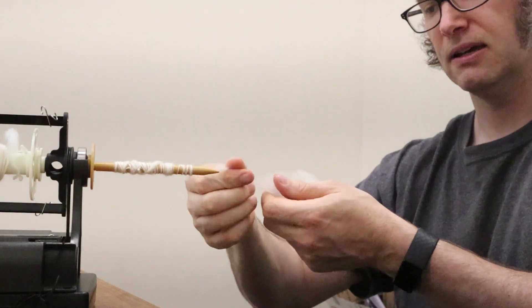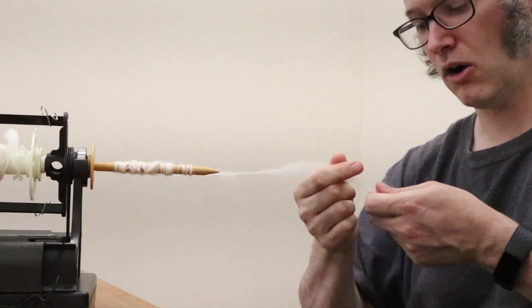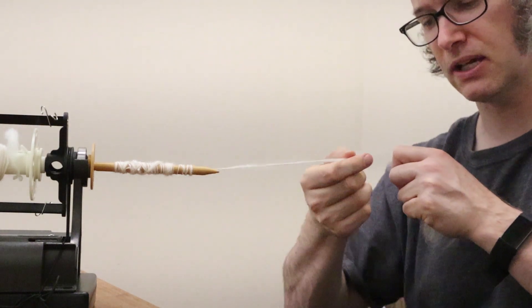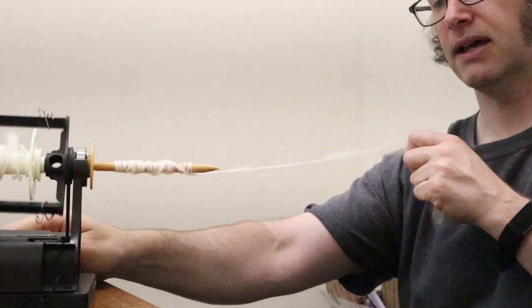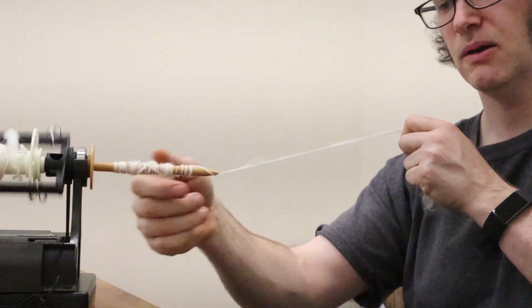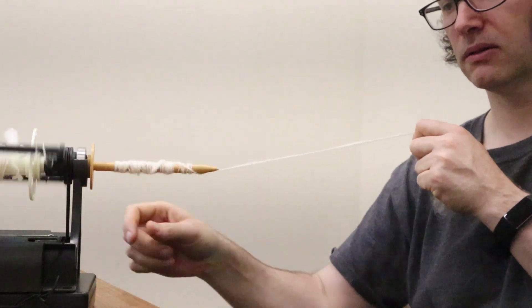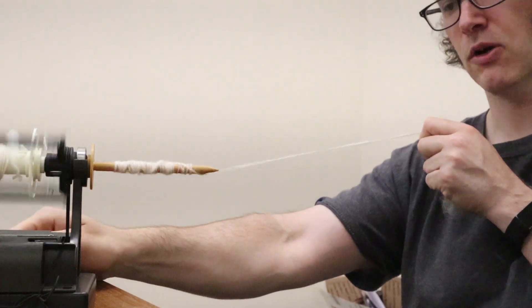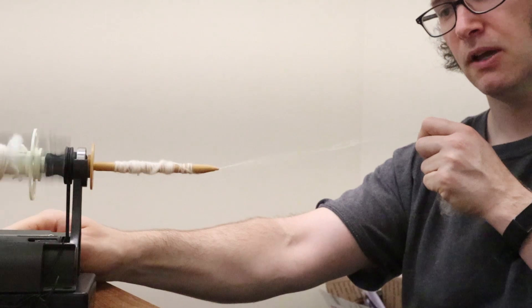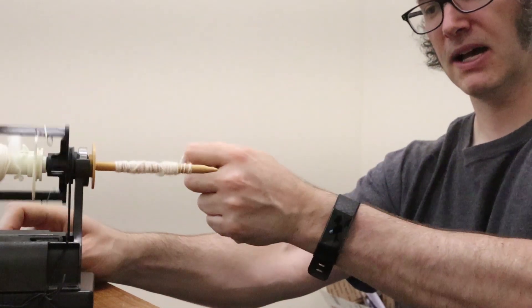And then you can either continue spinning off the tip or you can sort of pre-draft like I'm doing here. And now I'm just back to applying twist. Once I'm sort of happy with the twist in this yarn, you can go much faster after you've got experience.